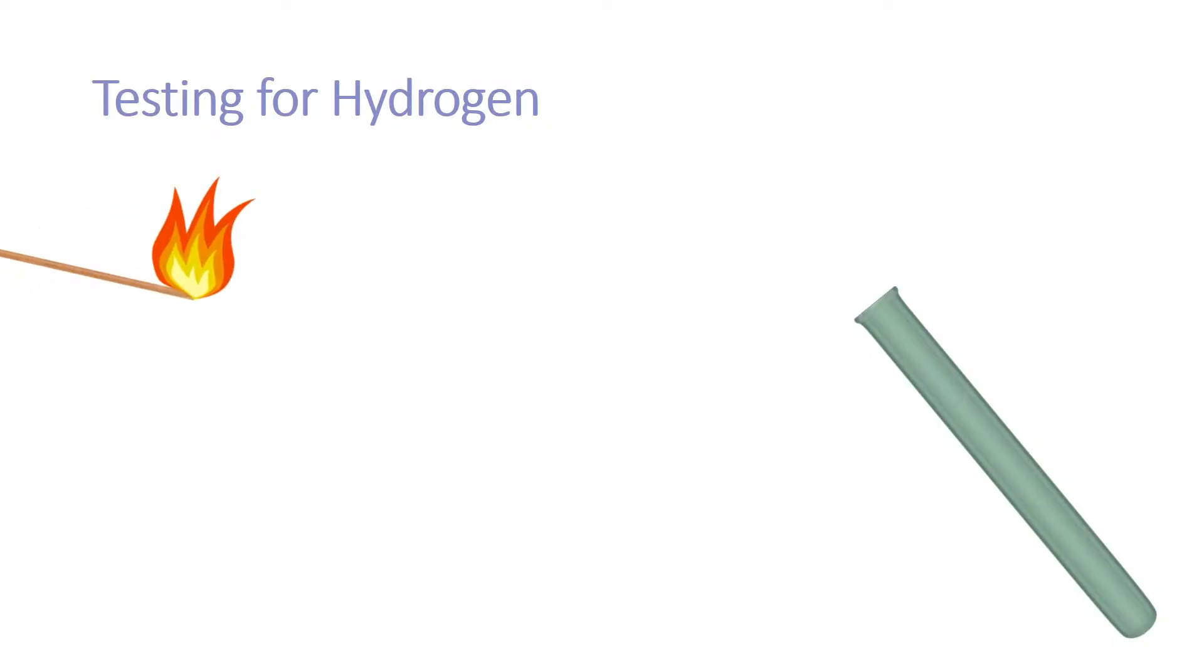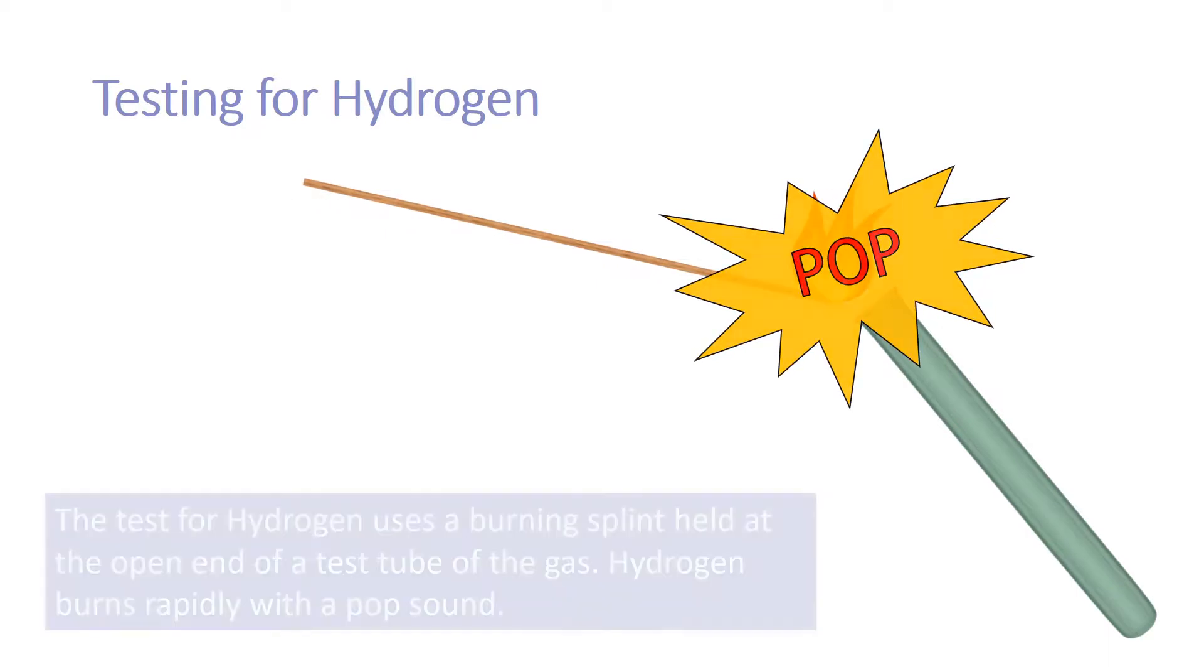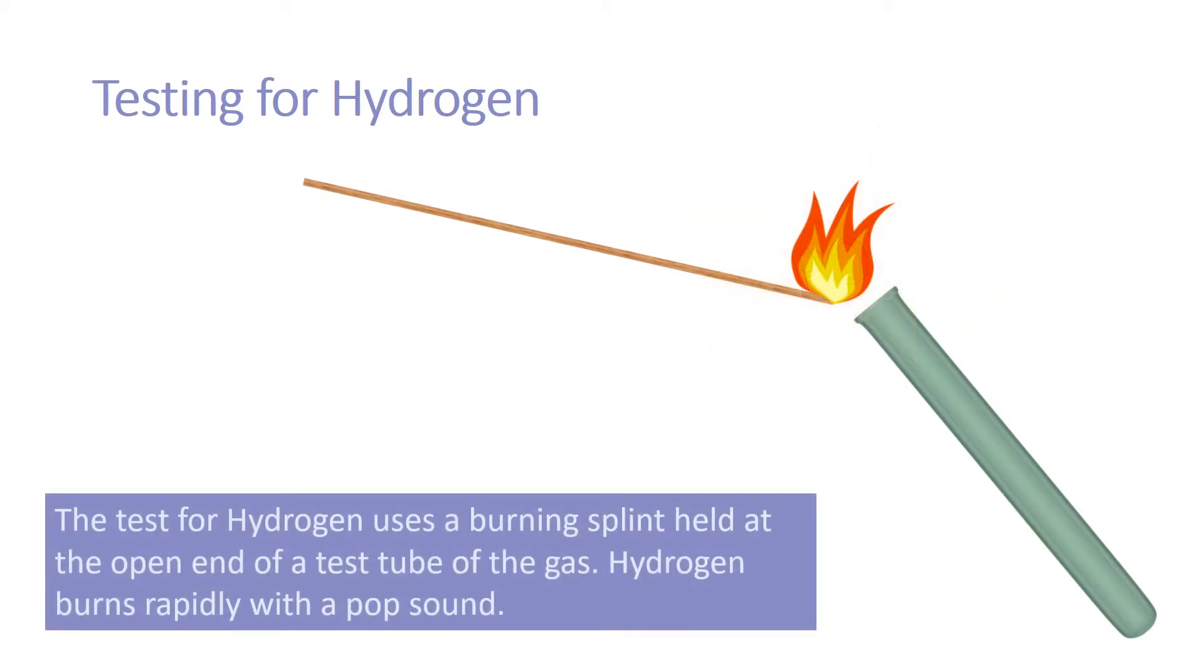To test for hydrogen, put a burning splint into the open end of a test tube. If hydrogen is present, it will burn rapidly with a pop sound.